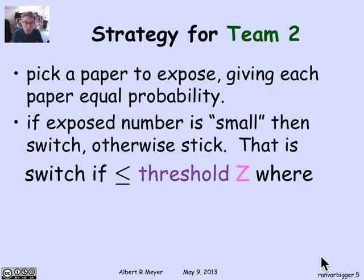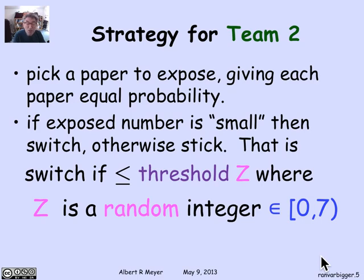So what you do — and this is where probability comes in — is pick z in a way that can't be predicted or exploited by team one. You pick z at random to be any number from 0 to 6, inclusive — that is, 0, 1, 2, up through 6. Being less than or equal to z means small, and being greater than z means large. When you see a small number, you switch; when you see a large number, you stick. But what counts as large or small will vary each time you play, depending on what random z comes out to be.